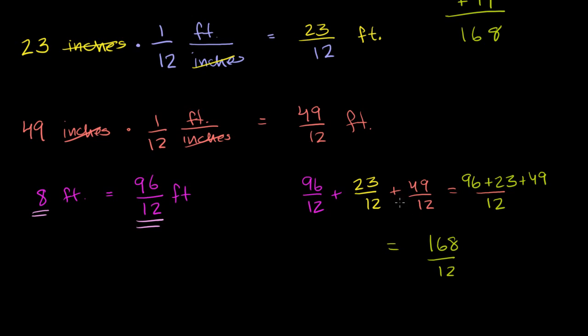And of course all of these are in feet, so it's 168 over 12 feet. But let's write this now as a mixed number so that we have a better idea of really how many feet it is. And to do that we just divide 168 by 12. So 12 goes into 168.